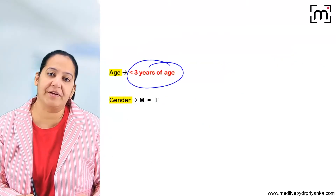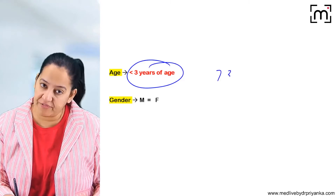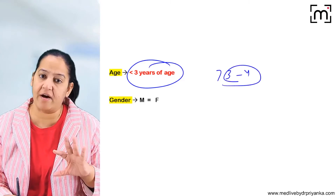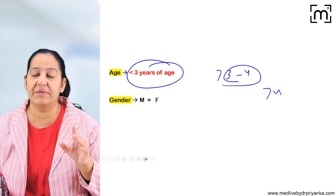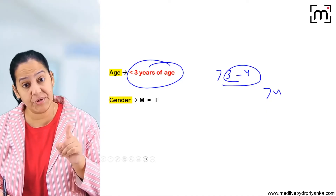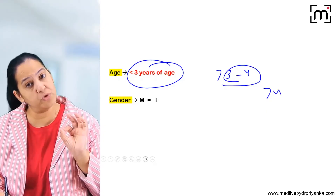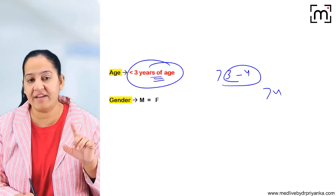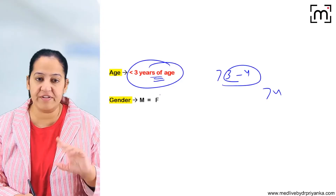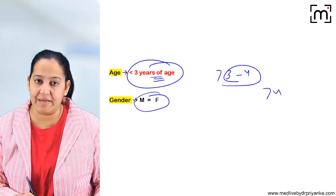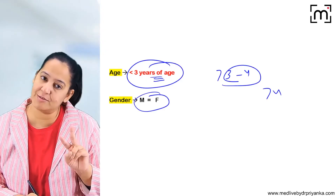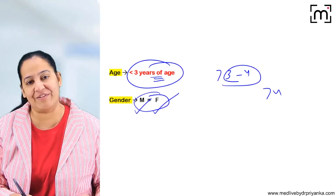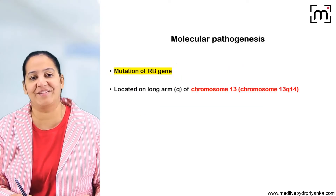Retinoblastoma is more common under three years of age. Between three and four years it can occur, but after four years of age it does not occur. So less than three years is the peak age. Gender-wise, there is no difference between male and female — the same incidence is found in both male and female children.